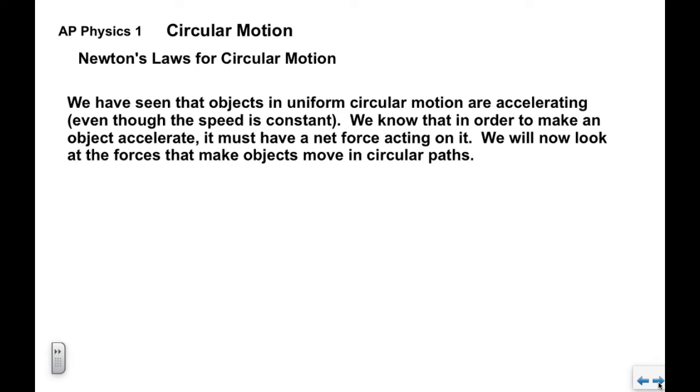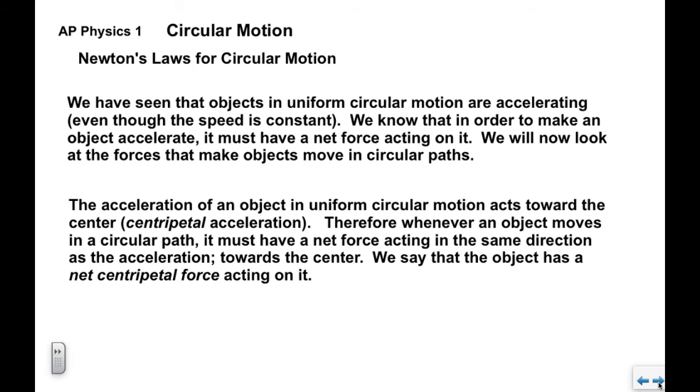We've already seen that objects in uniform circular motion are accelerating even though the speed is constant. We know that in order to make an object accelerate it's got to have a net force acting on it. So now we're going to look at the kinds of forces that can make objects move in circular paths. The acceleration of an object in uniform circular motion acts towards the center at all times, that's why it's called centripetal acceleration. Therefore, whenever an object moves in a circular path it must also have a net force acting in the same direction as the acceleration, which means towards the center. We say that the object has a net centripetal force acting on it.